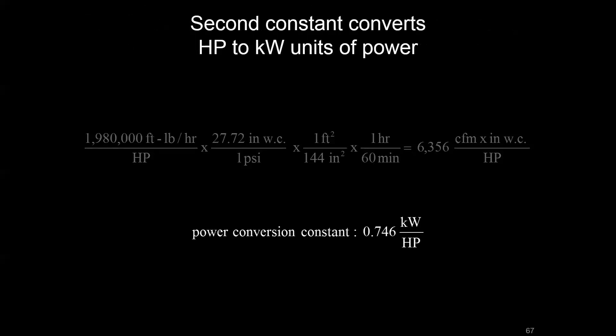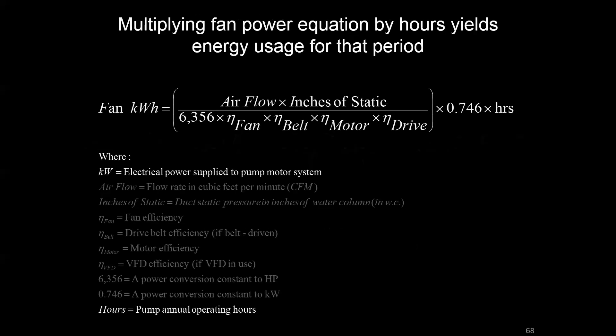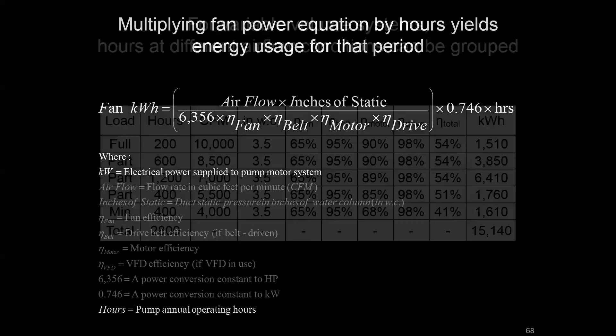Second constant, pretty straightforward, just the 0.746 kilowatts per horsepower so that we can talk in terms of kilowatts. And then the only thing missing to go from a fan power equation to a fan energy equation is this hours, this operating hours. And this can be a little bit trickier with air subsystems.